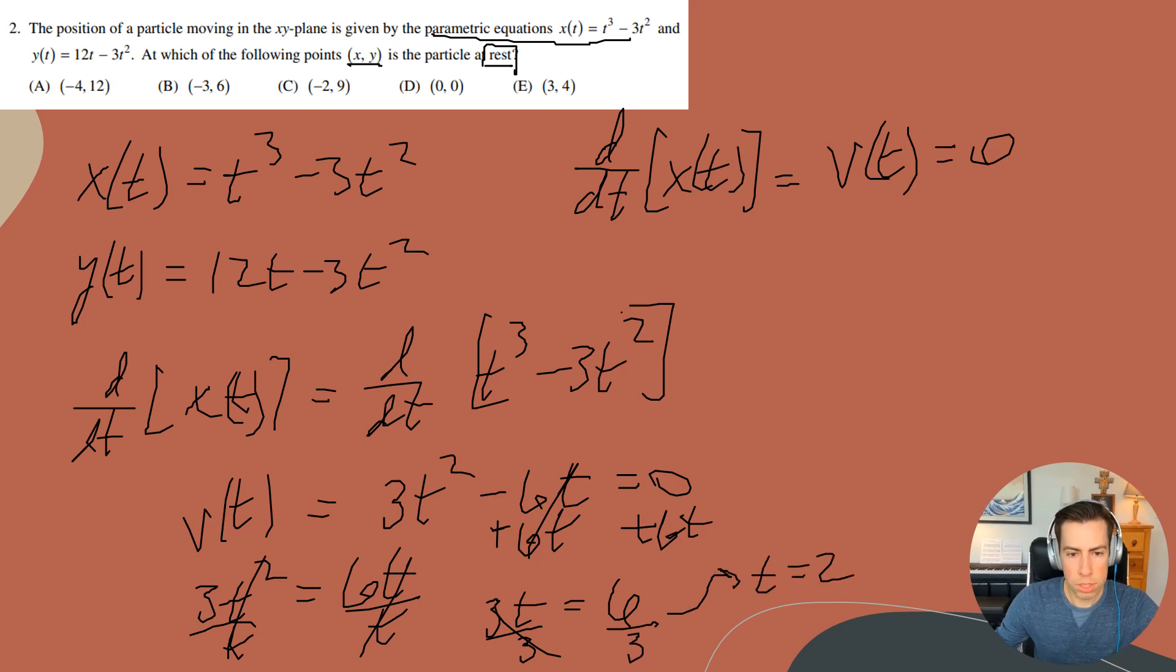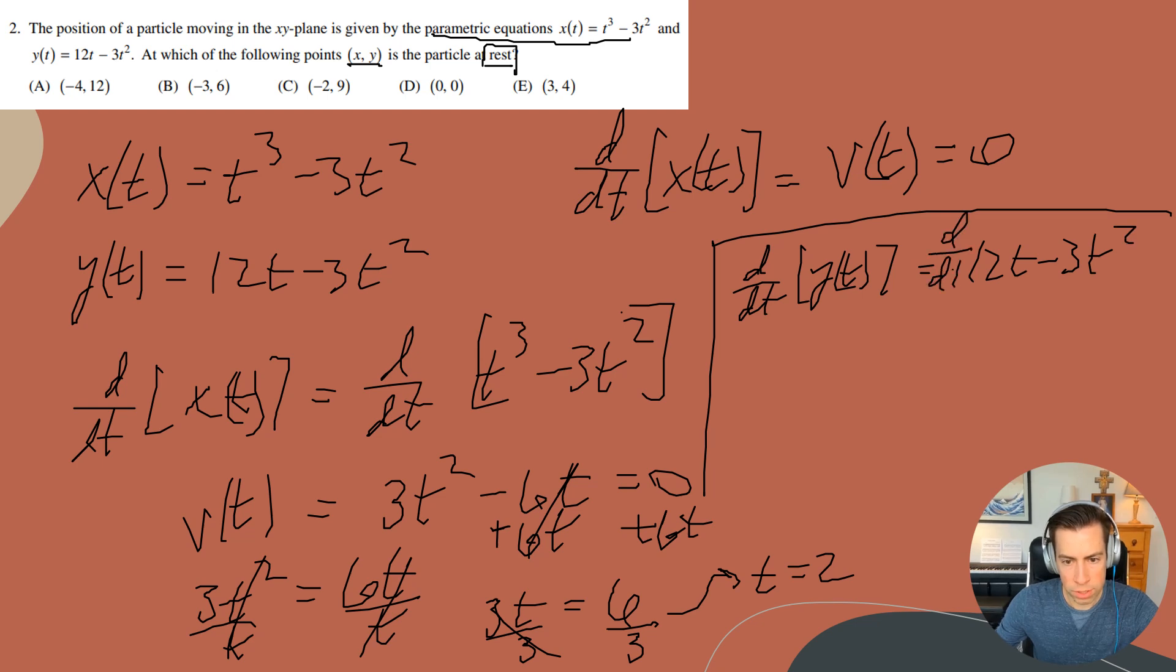So that works for our x coordinate. Now I want to do that for my y coordinate. I'll do the exact same thing, so I'll take the derivative of both sides with respect to t. I'm just showing all the steps so you can see the full thing. So I will then have my velocity, and this should have been my velocity in the x direction. This is going to be my velocity in the y direction with respect to t, and I'm going to get 12 minus 6t.